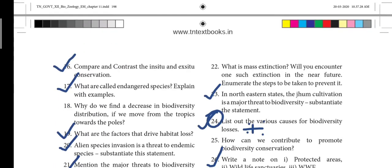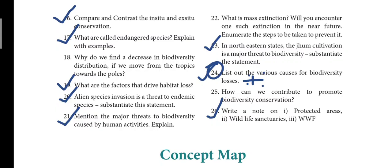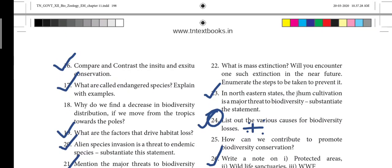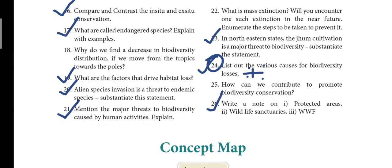17th question — what are called endangered species? Explain with an example. 19th question — what are the factors that drive habitat loss? 20th question — alien species invasion is a threat to endemic species; substantiate this statement. 21st question — mention the major threats to biodiversity caused by human activities. 23rd — jhum cultivation is a major threat to biodiversity. 24th — list out the various causes for biodiversity losses; a very important five-mark. 26th — write a note on protected areas, wildlife sanctuaries, and WWF.